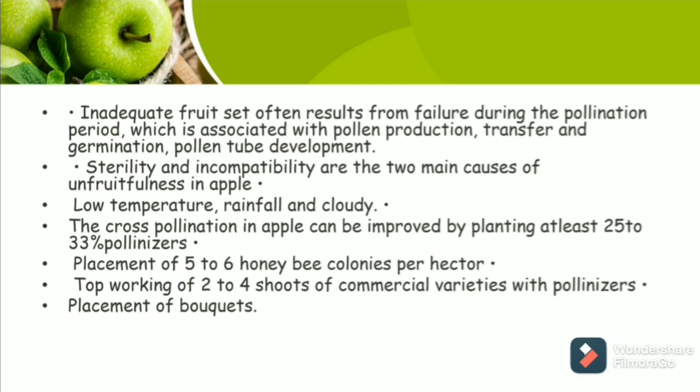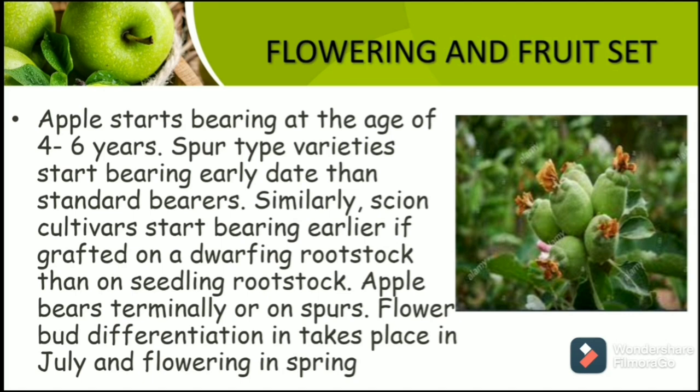Cross-pollination in apple can be improved by planting at least 25 to 33% pollinizers worldwide, while in India 11 to 30% is recommended. Placement of bouquets is also recommended to improve flowering. Apples start bearing at the age of 4 to 6 years. Spur-type varieties start bearing earlier than standard bearers. Similarly, scion cultivars start bearing earlier if grafted on a dwarfing rootstock than on a seedling rootstock. Apple bears terminally on spurs, and flower bud differentiation takes place in July, with flowering in spring.